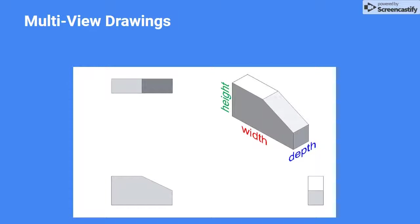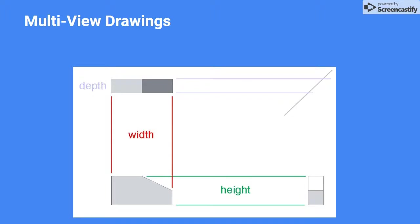The isometric view shows the width, height, and depth of the object. The height of the object is obvious in the front view and in the right side view. The width is displayed in the front view and the top view, and the depth is shown in the top view and in the right side view.